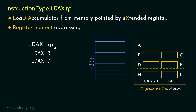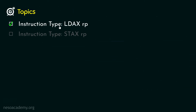In order to execute these instructions, we need to load the register pairs with the memory location first. Also note we don't have instructions like LDBX rp or LDCX rp, because the accumulator is a special purpose register which has different ways to address it. That was all about the instruction type LDAX rp — it occupies only one byte of space in memory.